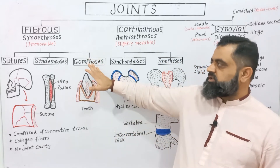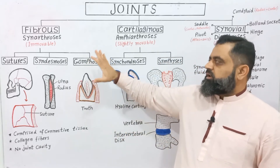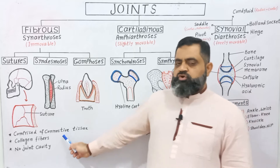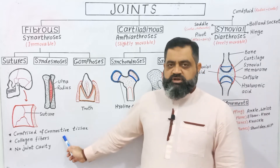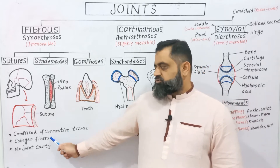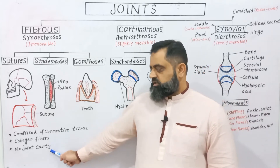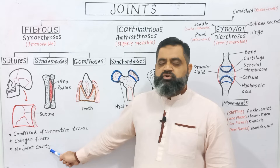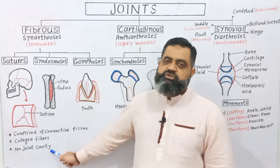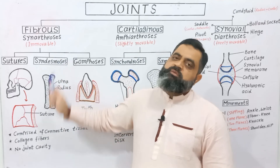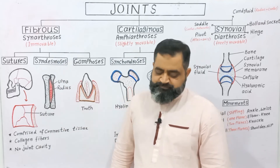Fibrous joints are comprised of fibrous connective tissue and also contain collagen fibers. They do not contain any joint cavity and they are immovable.